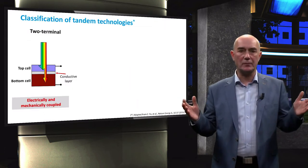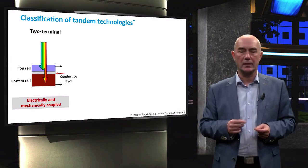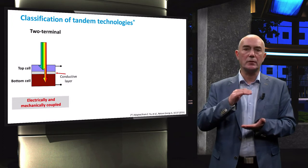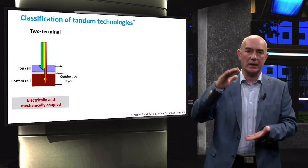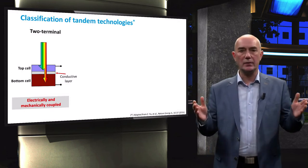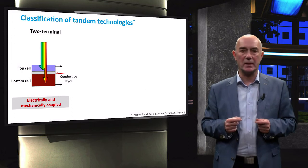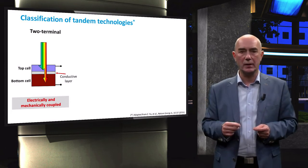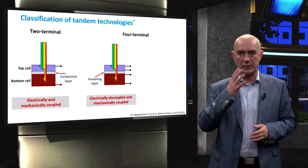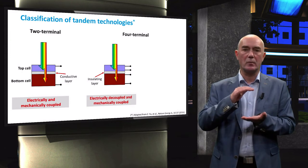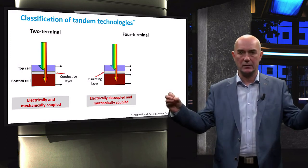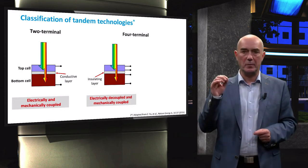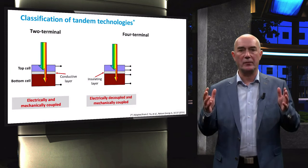You can avoid current matching if you use different configurations of a tandem solar cell. The first is a tandem solar cell with two terminals, where individual cells are electrically and mechanically coupled together and current from individual cells must be matched at their maximum power point to avoid power losses. To circumvent the current matching issue, a tandem cell can be fabricated with four terminals, so that individual cells, while mechanically coupled, are electrically decoupled. By removing the constraints of current matching, we no longer need to control the absorber thickness and parasitic absorption in the supporting layers of each component cell precisely.